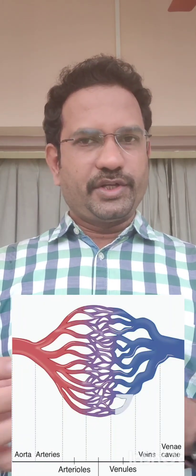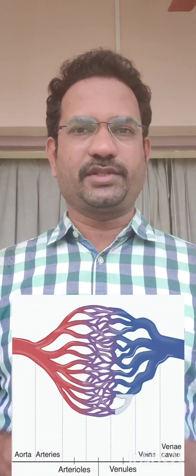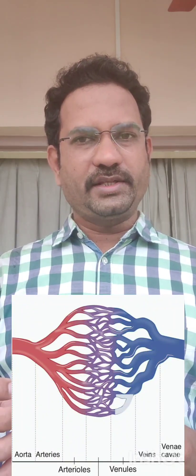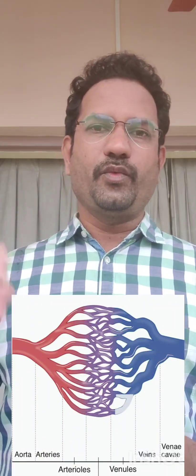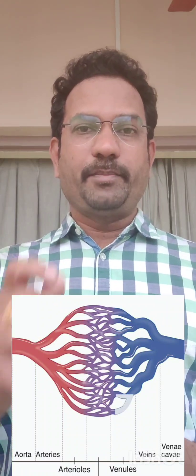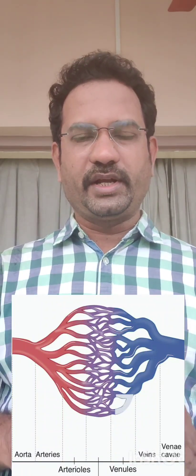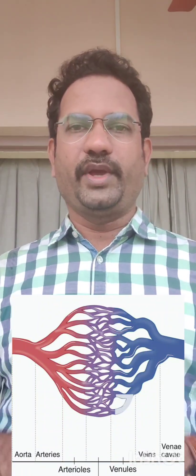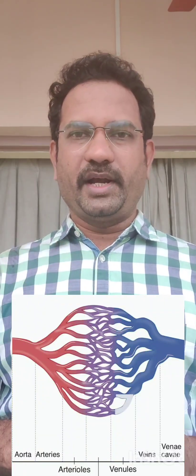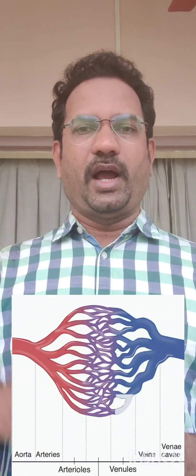When the oxygen is drained to the tissues and cells, blood becomes deoxygenated. It gets into the venules, then veins, and reaches the vena cava. Vena cava is the biggest vein in the human body — like the aorta for arteries, vena cava is for veins. So all these veins contain deoxygenated blood and they drain the blood to the heart.